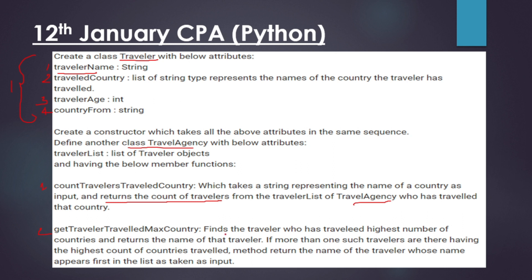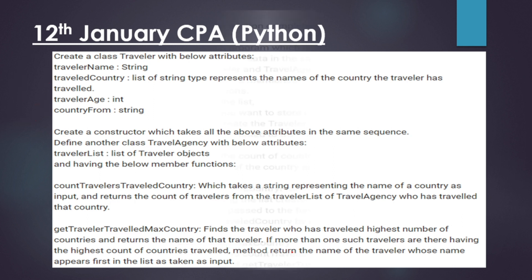The second member function is get_traveler_traveled_max_country, which finds the traveler who has traveled the highest number of countries and returns the name of that traveler. If more than one traveler has the highest count of countries traveled, the method returns the name of the traveler who appears first in the list — so we go with the order they appear in the list.